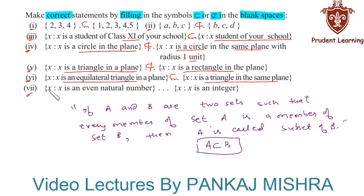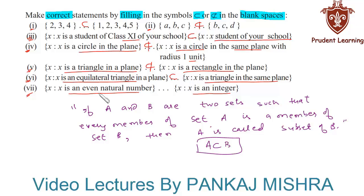Finally, in the last section, the first set is {x : x is an even natural number} and the second set is {x : x is an integer}. Every even natural number is also an integer, meaning every member of the first set is also a member of the second set. Hence, the first set is a subset of the second set. This completes our solution.